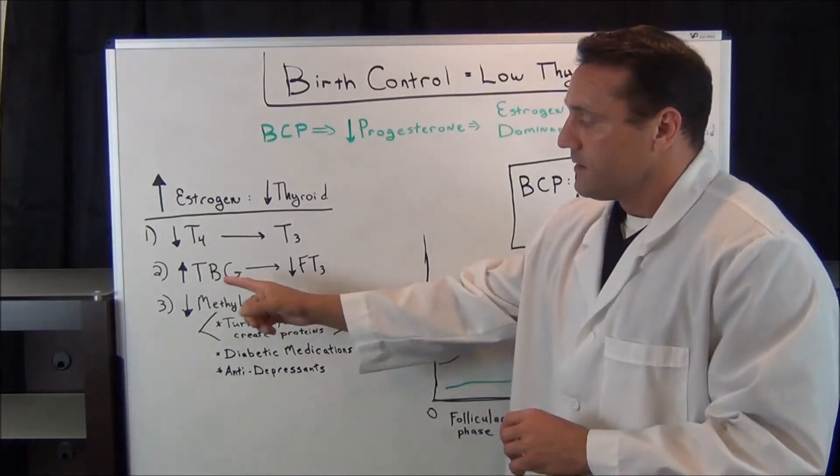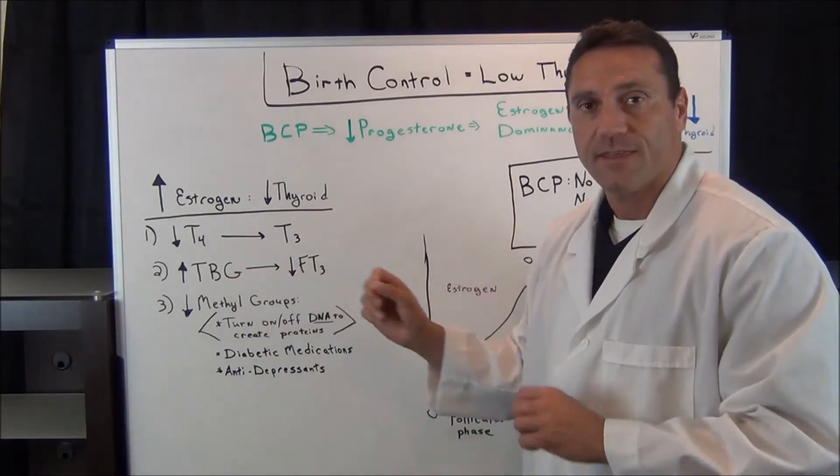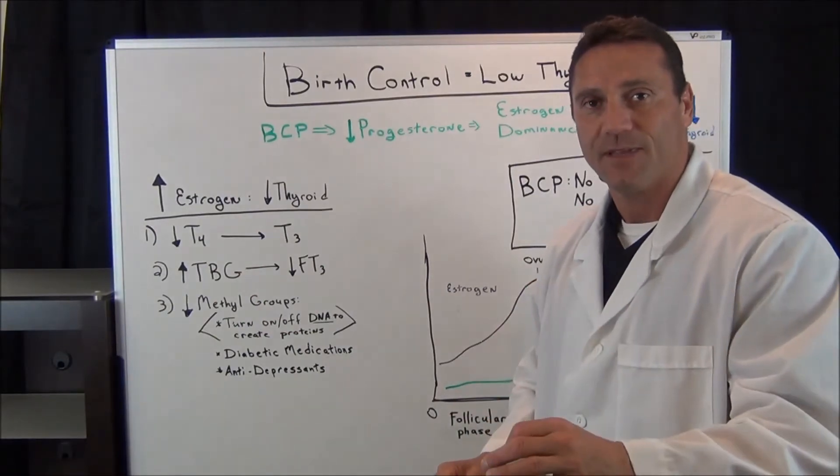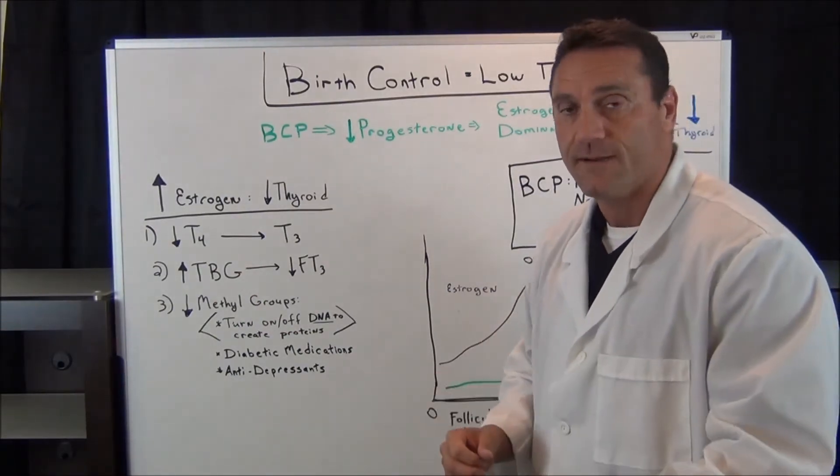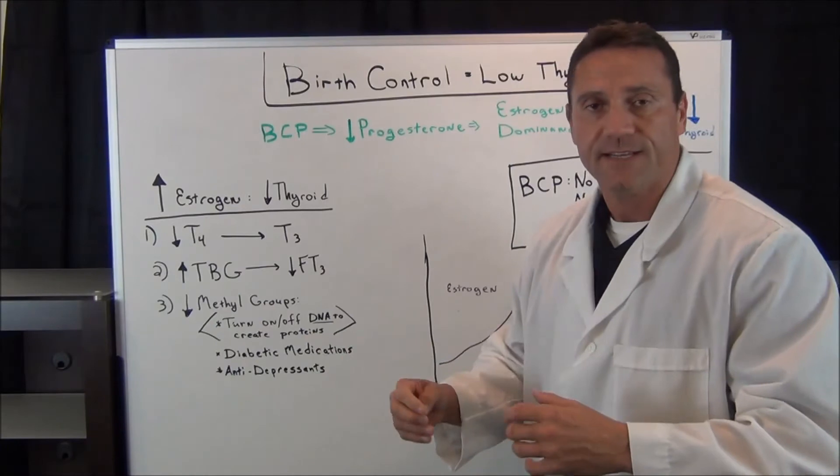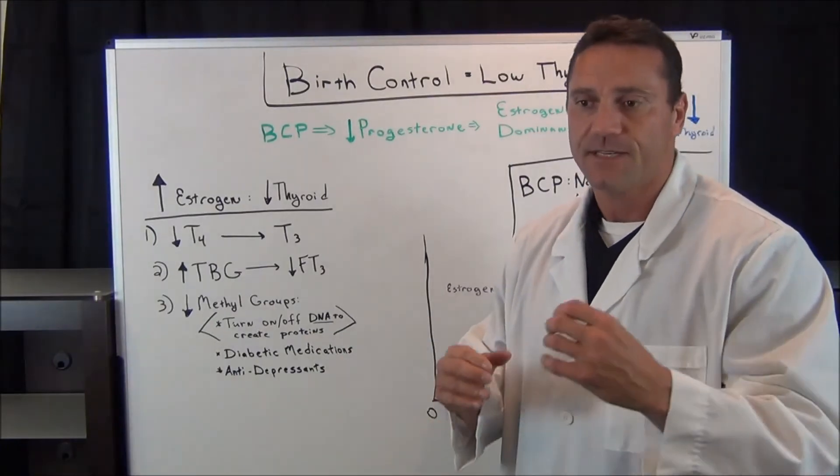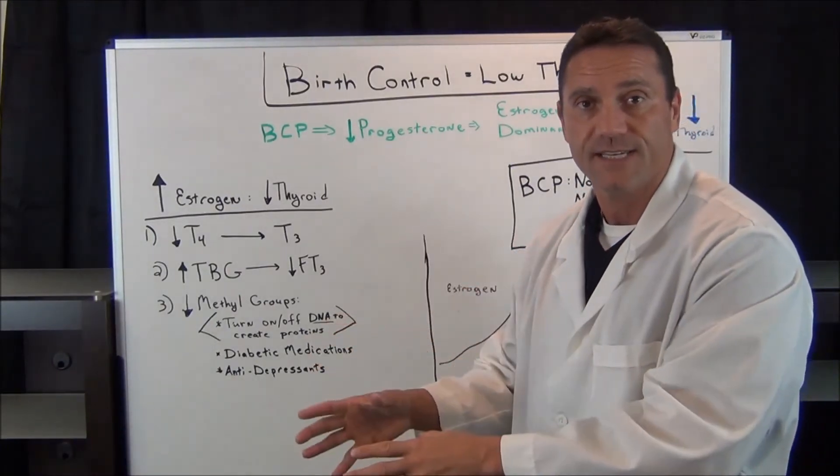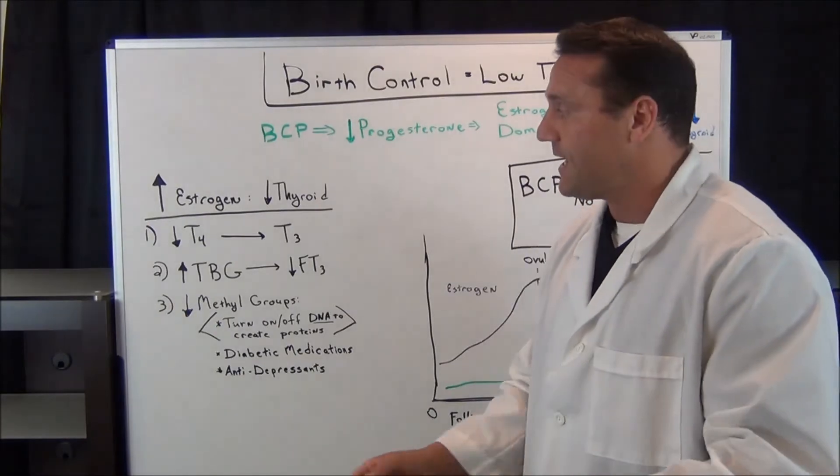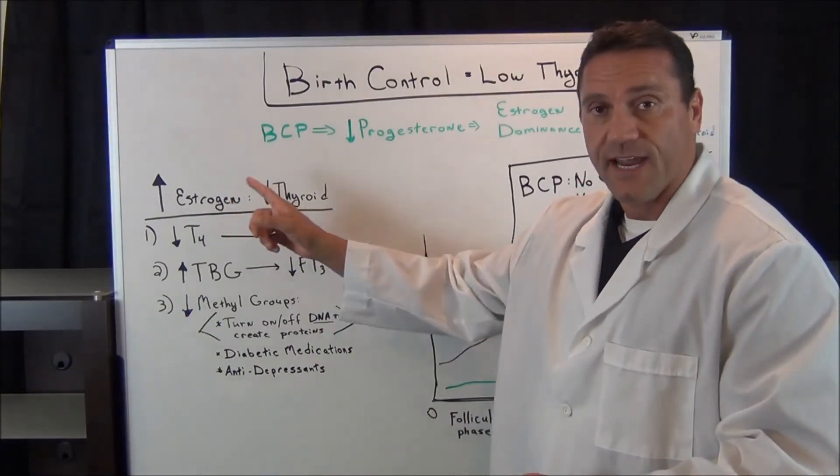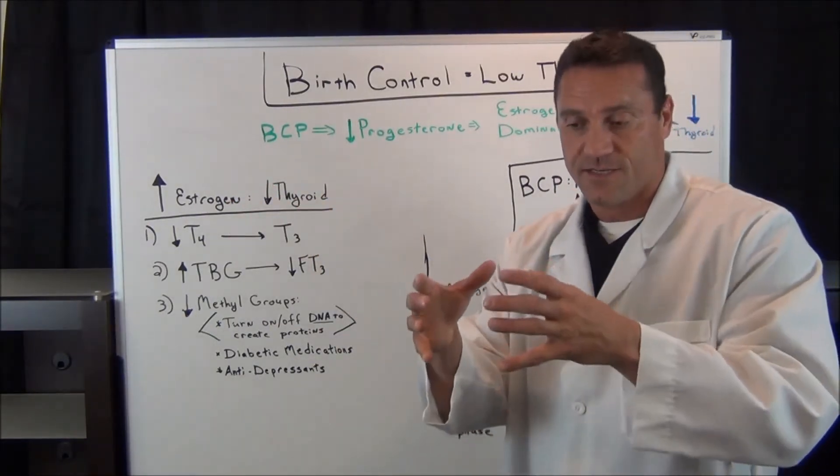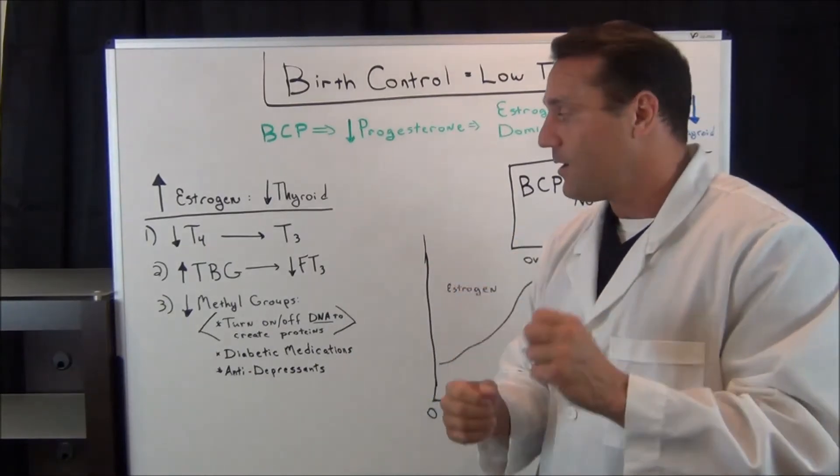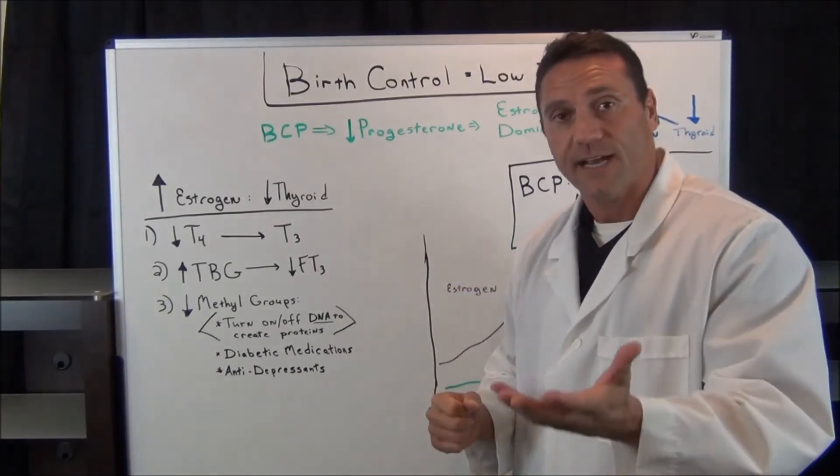Two, there's taxicabs called thyroid binding globulins. It's a transport protein. We call them the taxicabs that transport the hormones throughout the system. Estrogen and the thyroid hormone share the same taxicab. However, when you are estrogen dominant, when you're taking birth control pills...